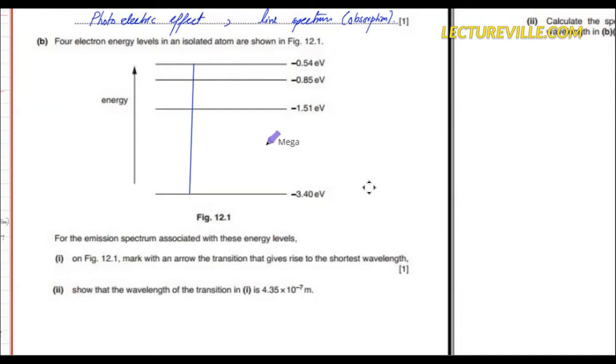It is an emission spectrum. Emission happens when the electron comes down — that is the emission spectrum.